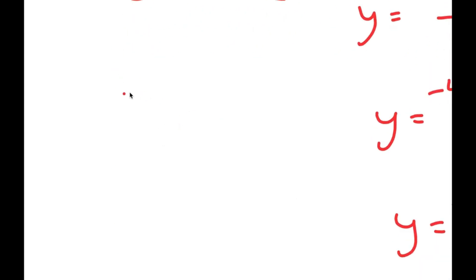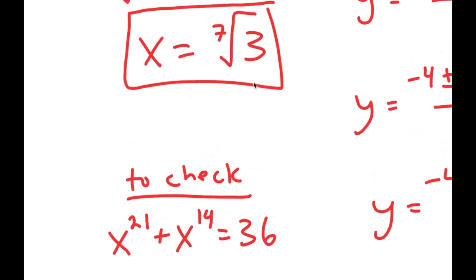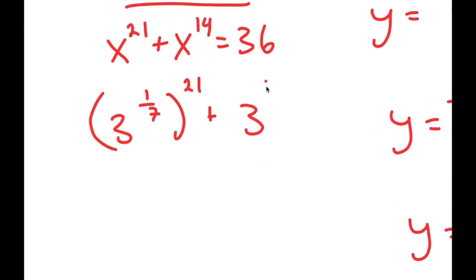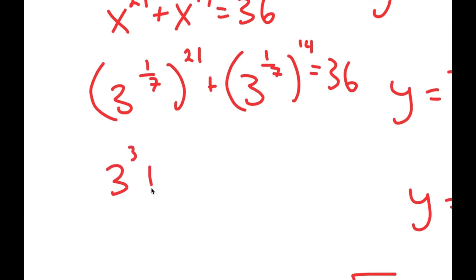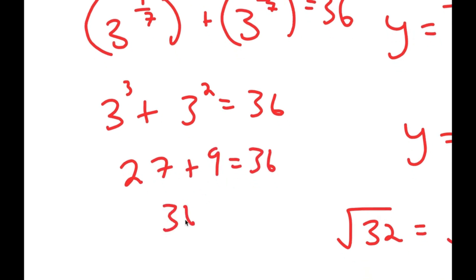To check: the equation is x to the power of 21 plus x to the power of 14 equals 36. The 7th root of 3 is 3 to the power of 1 over 7. So 3 to the power of 1/7 times 21 is 3 to the power of 3 equals 27, and 3 to the power of 1/7 times 14 is 3 squared equals 9. So 27 plus 9 equals 36. Verified.